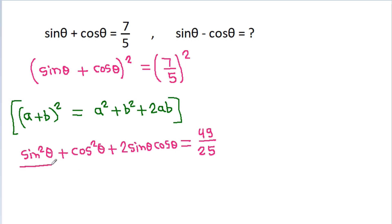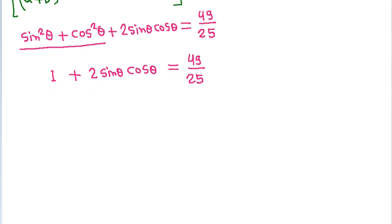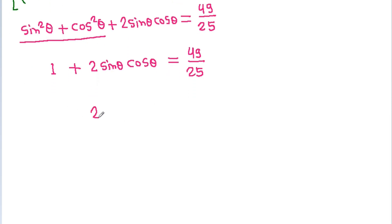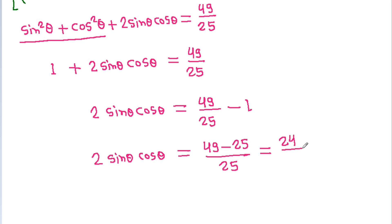And sin²theta plus cos²theta is 1, so 1 plus 2 sin theta cos theta is equal to 49 by 25. So 2 sin theta cos theta equals 49 by 25 minus 1, which is 49 minus 25 by 25, that will be 24 by 25.